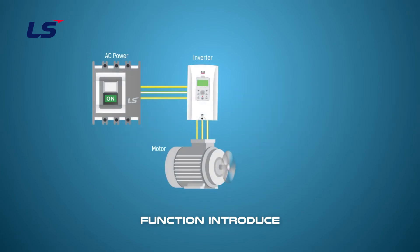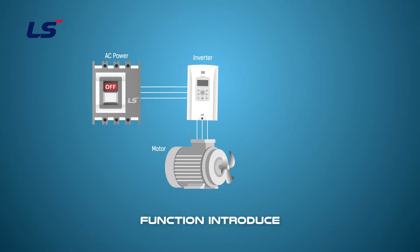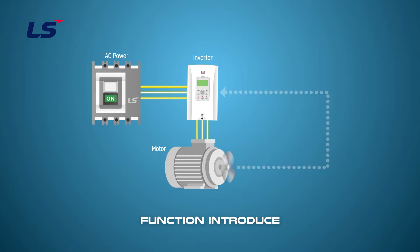If the input power is temporarily cut off or a power outage occurs, the voltage of the DC power supply of the inverter decreases, and a low voltage trip occurs to cut off the output. To prevent this, the DC link voltage must be controlled so that it does not drop in order to continue operation of the inverter. To do this, it is necessary to control the energy generated by the rotation of the motor to flow into the inverter.